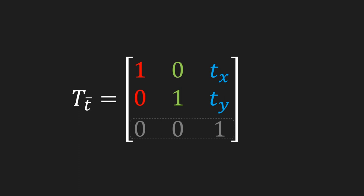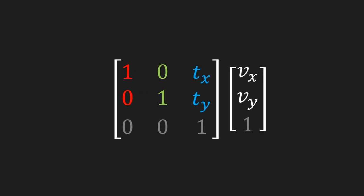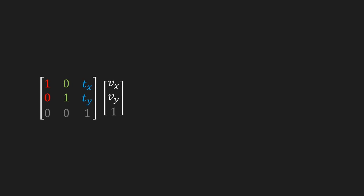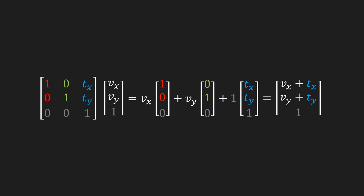Explaining homogeneous coordinates is unfortunately beyond the scope of this video. If we now take a vector, we also have to augment it by adding a 1 at the bottom. If we want to know where vector v ends up after a translation, we multiply our translation matrix with our augmented vector — adding column-element products — which gives us a new vector. You'll notice that a translation is actually just equal to taking our vector and adding the translation vector to it.